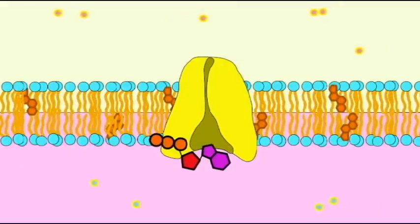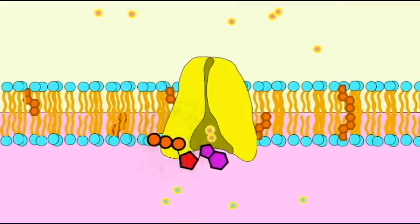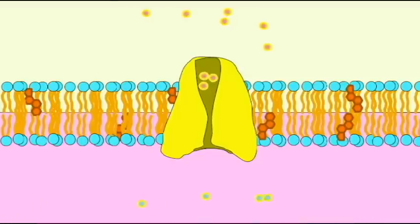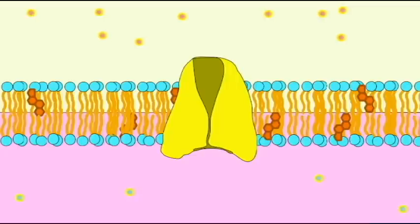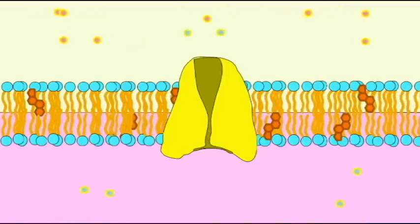This pump takes sodium ions from inside the cell, three at a time, and pumps them out of the cell, and takes potassium ions which are out of the cell, two at a time, and pumps them into the cell.